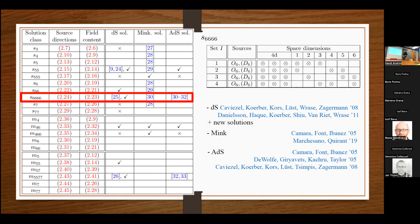S stands for single type of dimensionality — so you just have sources of dimension p=6, basically. M is multiple — so it can be a mix of p=4 and p=6, or p=5 and p=7, things like this.